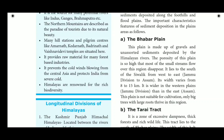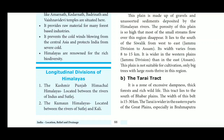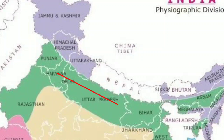The Bhabar Plain lies to the south of the Shivalik range from west to east. We already know about the Himalayan ranges — Central Himalayas, Lower Himalayas, and Eastern Himalayas. The Bhabar extends from Shivalik, from Jammu division to Assam. Its width varies from 8 to 15 kilometers. It is wider in the western plains than in the east. This plain is not suitable for cultivation; only big trees with large roots thrive in this region.